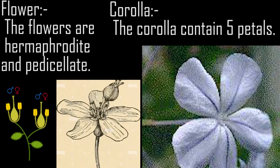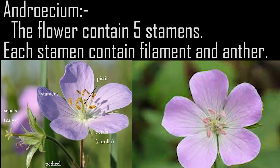Flower: The flowers are hermaphrodite and pedicellate. Corolla: The corolla contains five petals. Androecium: The flower contains five stamens; each stamen contains a filament and anther.